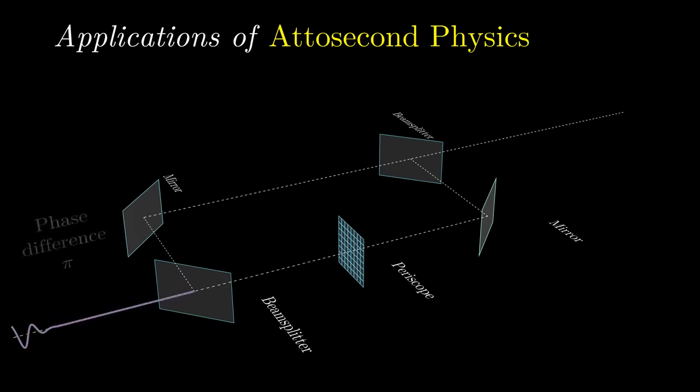Two consecutive attosecond pulses are generated with a carrier envelope phase difference of pi. A beam splitter then separates the pulses into two pathways, similar to a Michelson interferometer, and the polarization of one pulse is rotated by 90 degrees. When they're brought back together, the first pulse that irradiates the junction is called the injection field. This pulse stimulates the release of charge carriers, but does not drive them between the electrodes due to its vertical polarization.